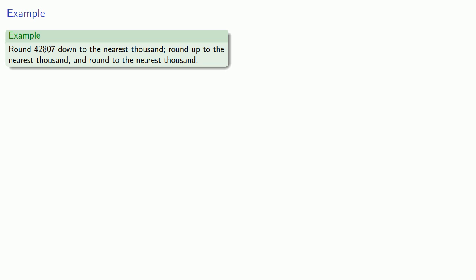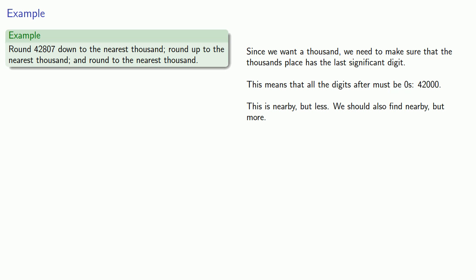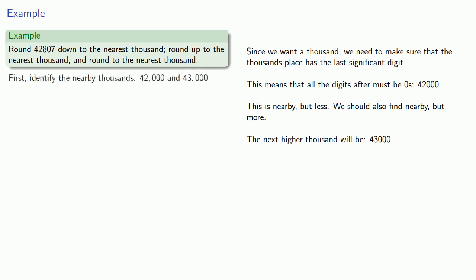Since we're rounding to a thousand, we need the thousands place to have the last significant digit, meaning all digits after it must be zeros. So one possibility is 42,000, where we've replaced all digits after the thousands place with zeros. This is a nearby thousand that's less. The nearby thousand that's more is 43,000. So if we want to round down, we go to 42,000.